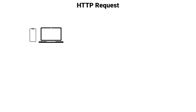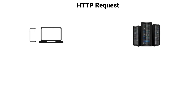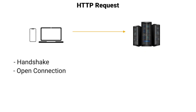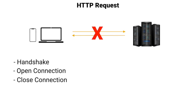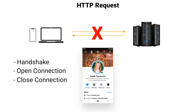First, let's have a quick introduction to the HTTP request. Here is our client and here is our server. The client makes a request to the server for data, the handshake is done, the connection gets opened, and then the server does its work and sends the response back to the client using that already opened connection, and then finally the connection gets closed. One use case of HTTP request is fetching profile information in a Facebook application.